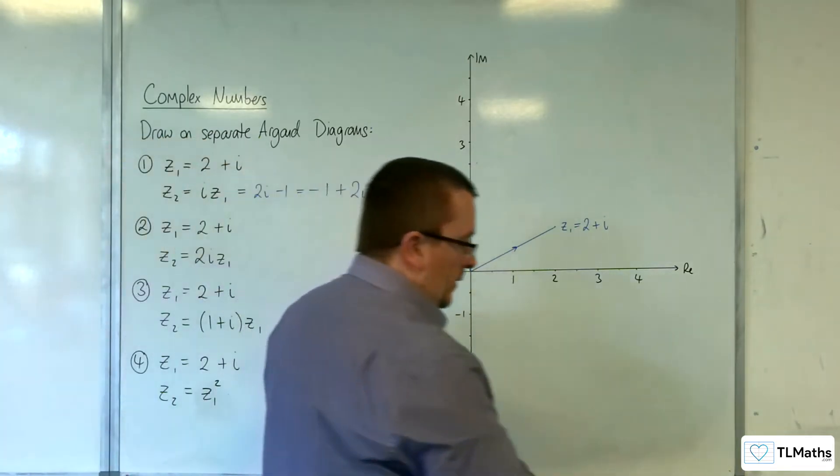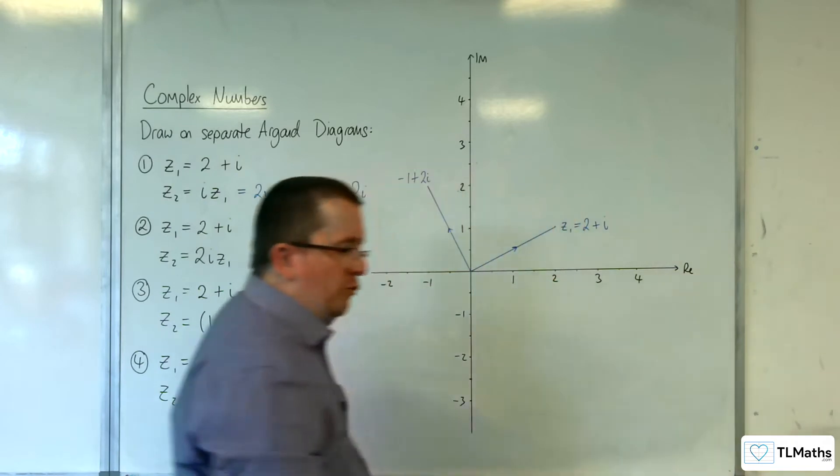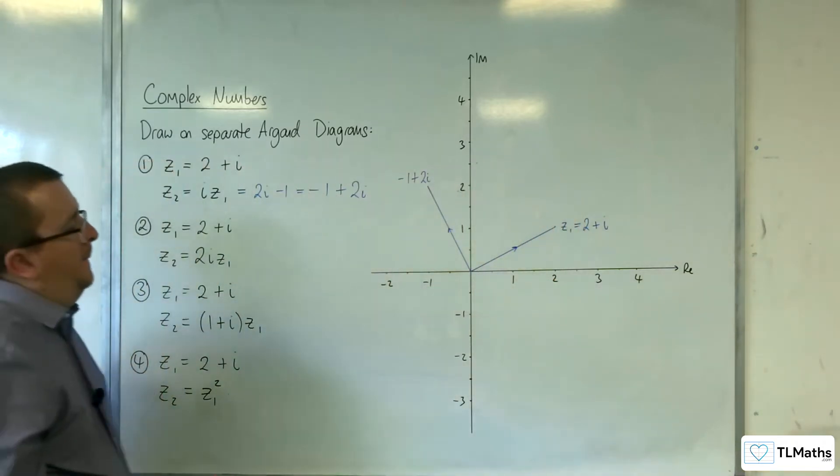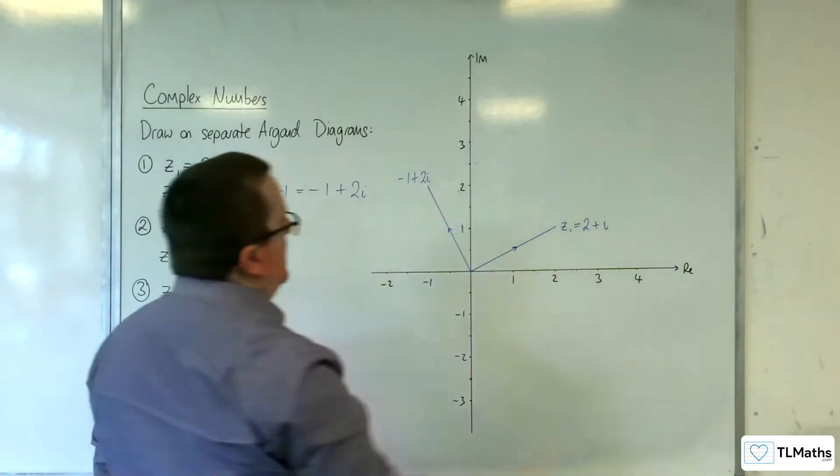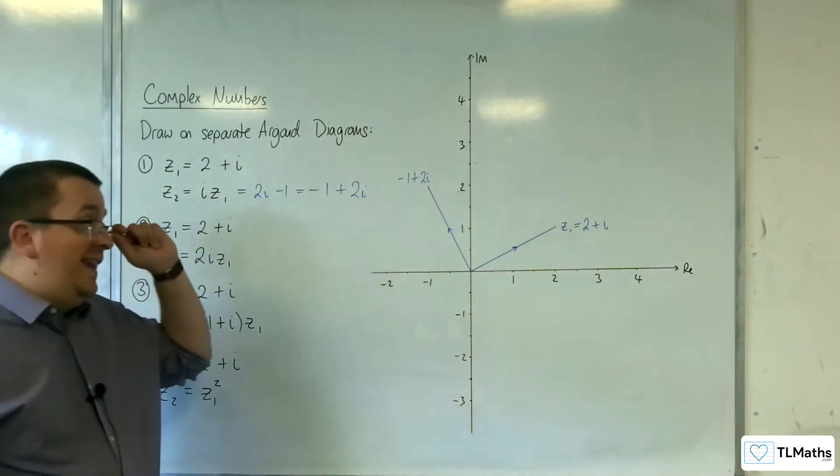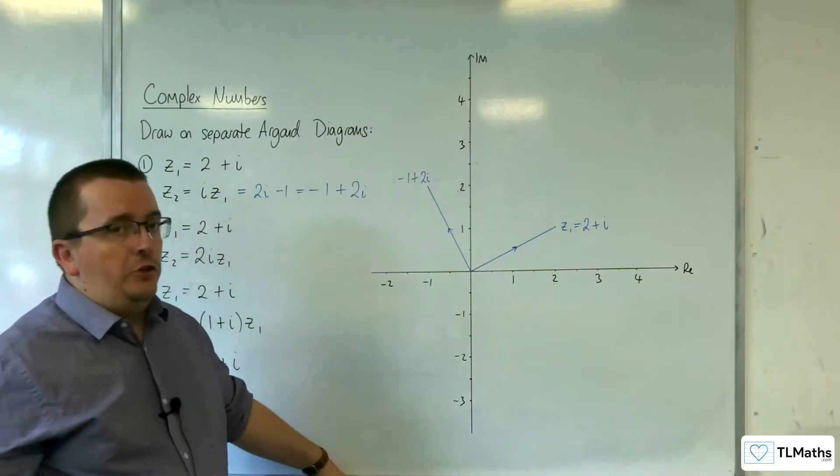Minus 1 plus 2i is this complex number here. Now, what do we notice? This one is 2 along 1 up, that's 1 along 2 up.